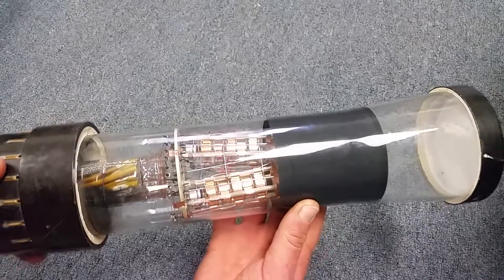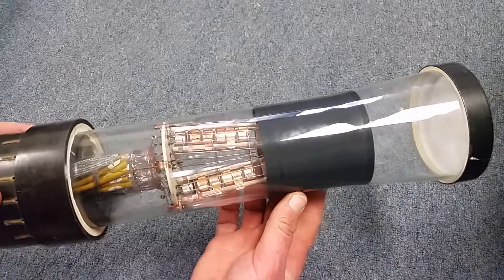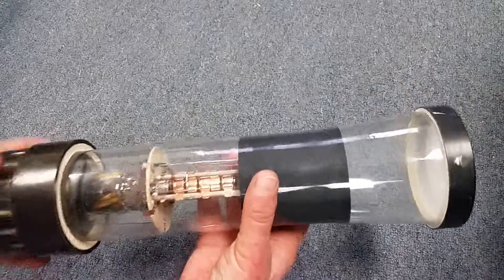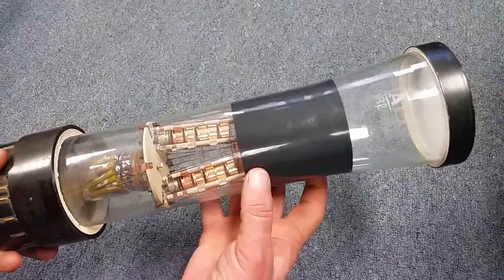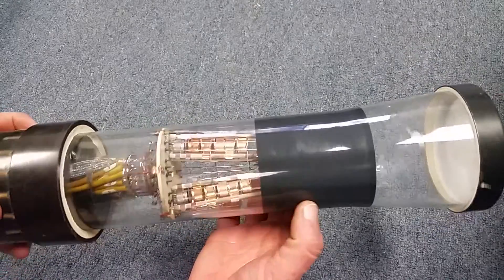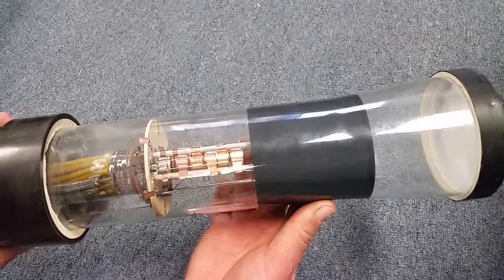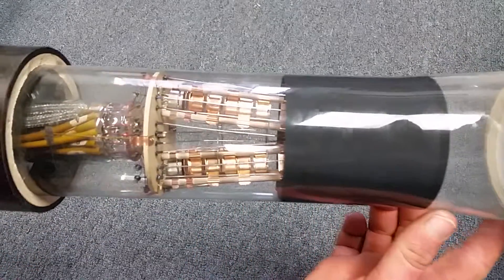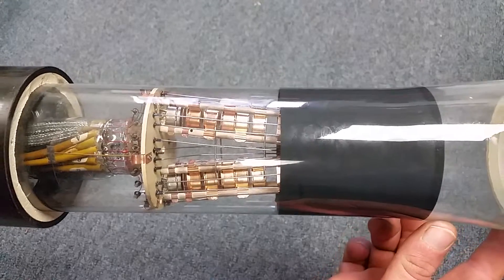these radars - and there were, I don't know, maybe a thousand Wurzberg radars. They made a lot of them. And then spares of course. These tubes, they must have made a lot of these tubes at one point.